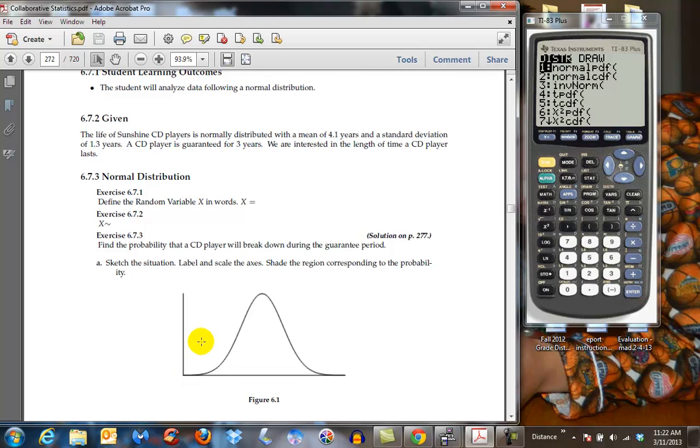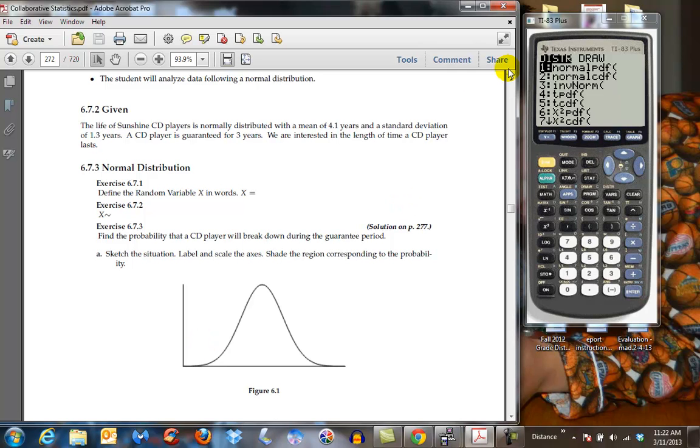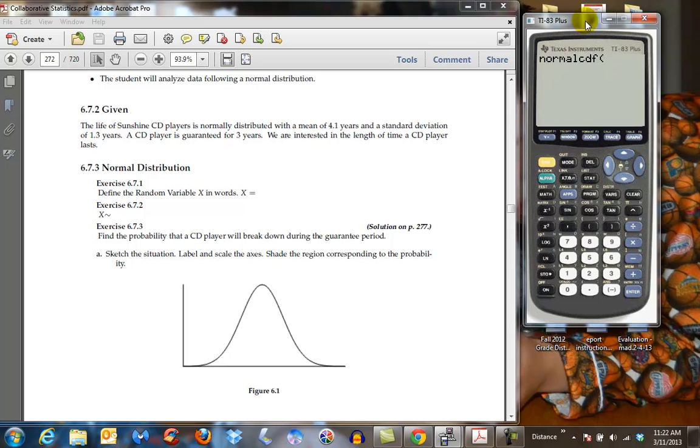So when we do less than, we use normal CDF. Now we have to put in a low point. I always put in negative, as close to negative infinity as I can because I know it's the smallest number I can put in. So negative 1 and then we use the second e to the 99th power. Now this means I have a negative 1 followed by 99 zeros, really, really, really small negative amount, far away from zero that we can put into our calculator, comma.